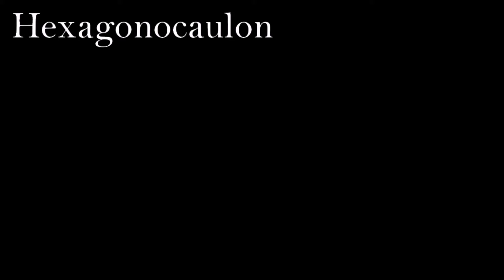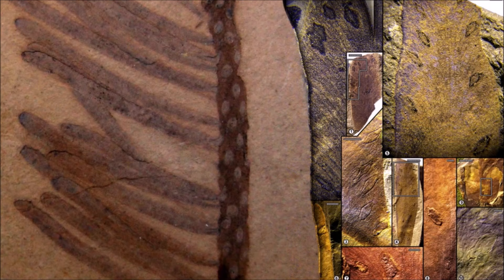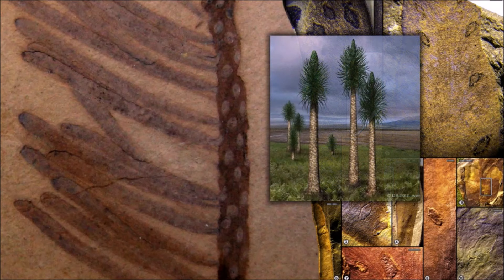This simple plant is known from several locations in the Southern Hemisphere, including Triassic rocks in the Antarctic Peninsula. Hexagonocaulon was a flat-bodied, or thallous, liverwort, similar to many liverwort species alive today. It lacked leaves and roots, and anchored itself with fine hairs, or rhizoids, which formed tufts along its underside. Like modern liverworts, Hexagonocaulon did not have any internal vessels for conducting water. As a result, the plant was restricted to damp habitats.